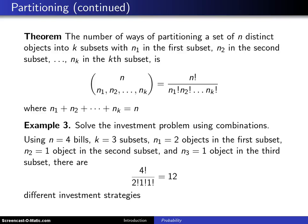Here is a theorem used to determine the number of ways of partitioning a set of objects. The number of ways of partitioning a set of n distinct objects into k subsets with n1 in the first subset, n2 in the second subset, n3 in the third subset, all the way up to n_k in the kth subset is the multinomial coefficient, which we defined earlier.